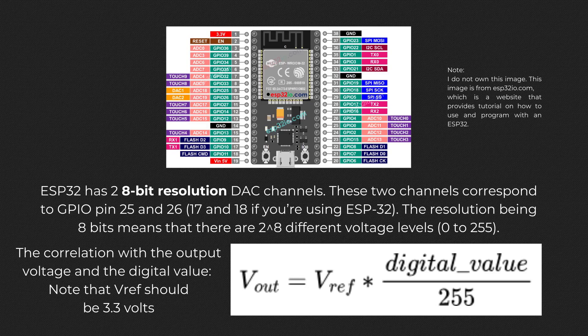The resolution of a DAC indicates the number of possible output voltage levels. For the ESP32, it has two 8-bit DAC channels located at GPIO25 channel 0 and GPIO26 channel 1. For the ESP32-S2, they are pins 17 and 18 respectively. This means you can generate two analog signals out of these pins, outputting voltage within the range of 0 to 3.3 volts based on the input digital value varying from 0 to 255.